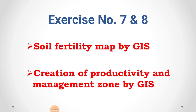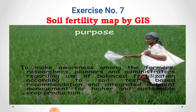Good morning, dear students. This is the next exercise of our course. The course number is AGRO3612. This is exercise number seven and eight. The title of exercise seven is 'Soil Fertility Map by GIS,' and exercise number eight is 'Creation of Productivity and Management Zone by GIS.'